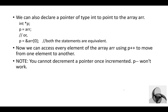We can declare a pointer of type int to point to the array ARRR: `int *p; p = ARRR;` or equivalently `p = &ARRR[0]`. Both statements are the same. p is a pointer that points to the first array element. We can then access every element of array ARRR using p++ to move from one element to the next.